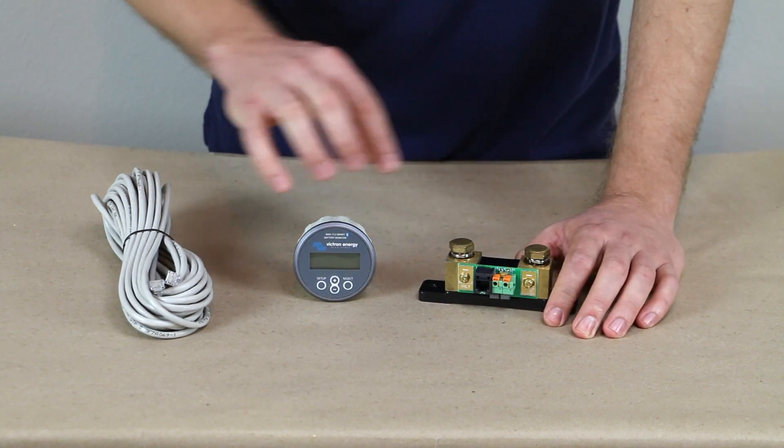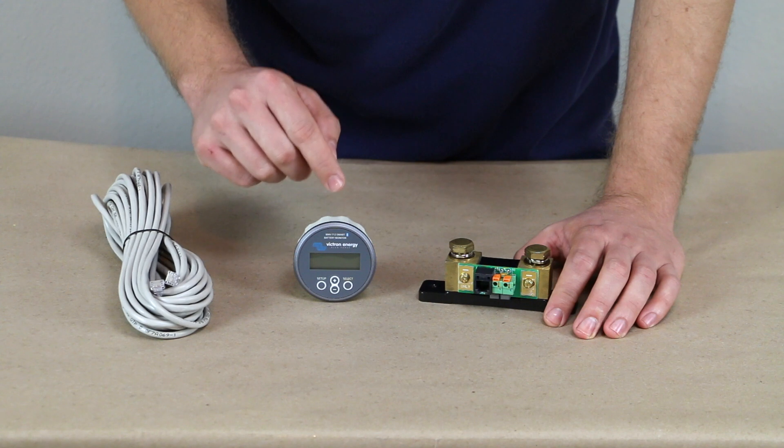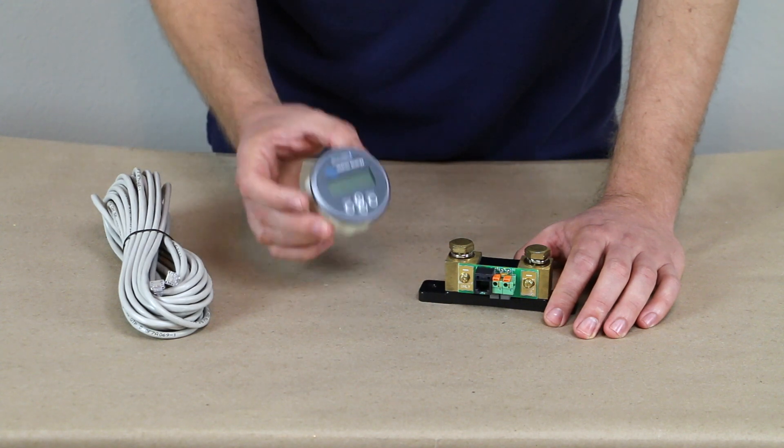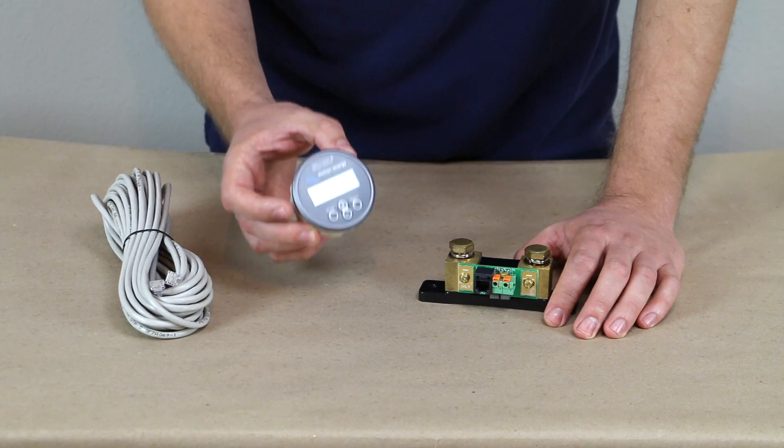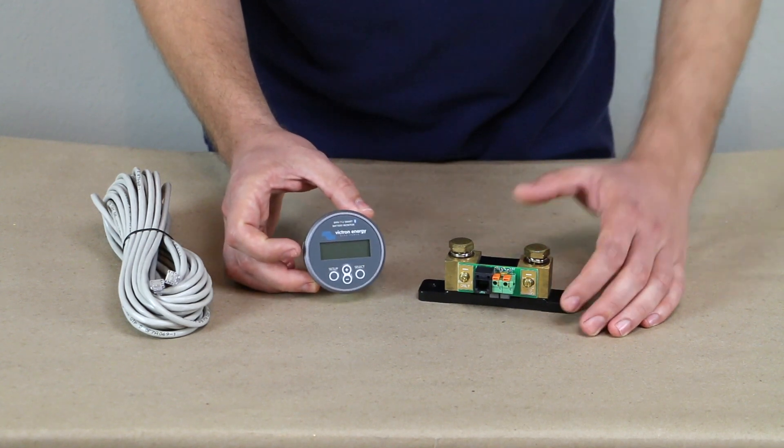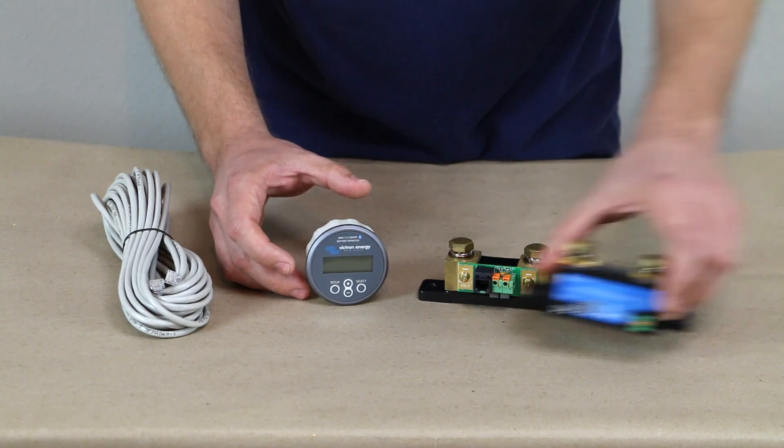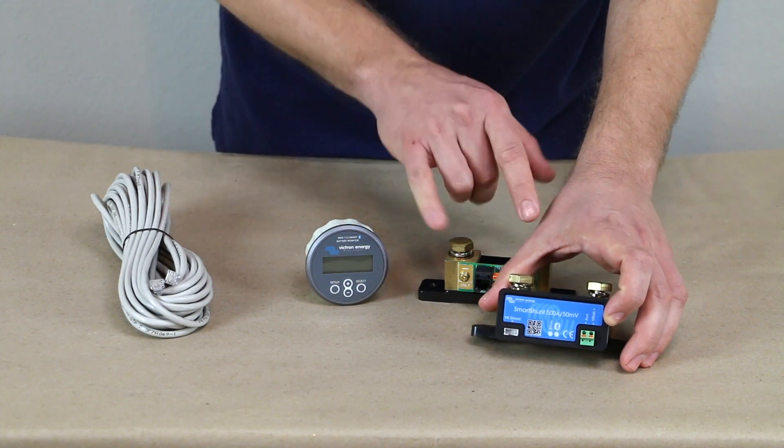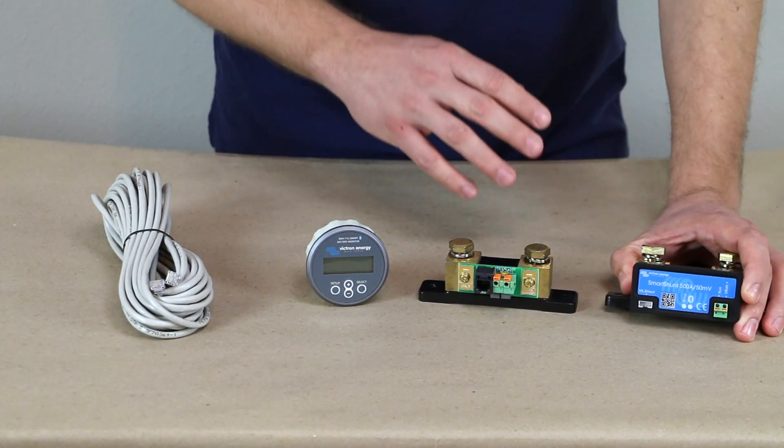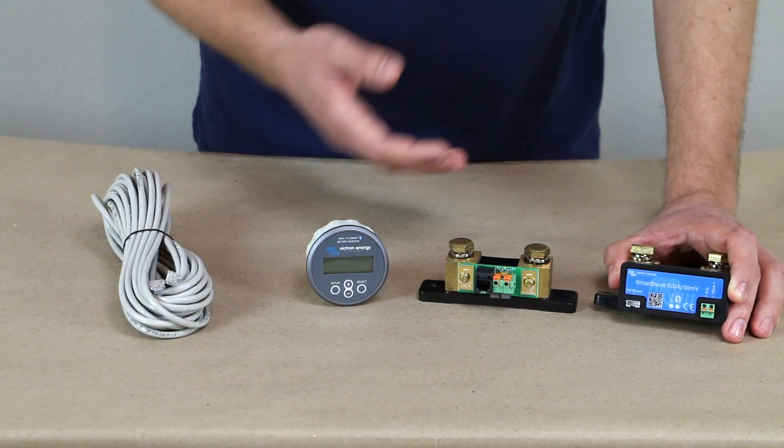But basically, this is going to put out the Bluetooth signal. And a lot of people are just going to be using their smartphones or tablets. And at some point, this may become superfluous or not needed and just becomes wasted money. This is about two hundred and six dollars and the smart shunt is one hundred and thirty. So it's about seventy five dollars more to get the screen. And if you find yourself using your smartphone for everything and constantly checking it with that, this is just really not needed.